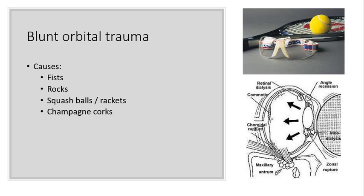Here are some common causes of blunt orbital trauma. They include fists — someone punching somebody else — rocks being thrown, squash balls or rackets hitting the eye, and champagne corks, which are another common cause of orbital trauma. The simple prevention is to wear eye protection, particularly when playing ball sports or when opening a bottle of champagne.